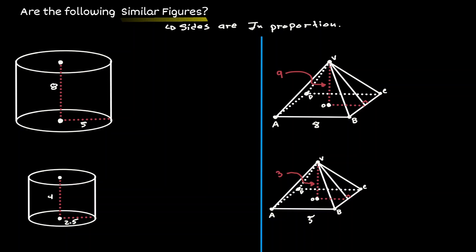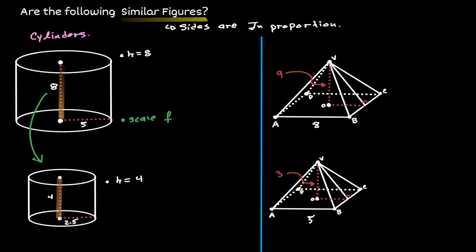Let's consider the two cylinders on the left-hand side and compare the height of both. On the cylinder on top, the height is equivalent to 8, and on the bottom, the height is equivalent to 4. Knowing this, we can try to find a scale factor. We can define the scale factor by obtaining the height of one figure divided by the height of the other figure. So we will have 4 over 8, which is equivalent to 1 half.